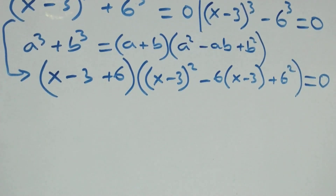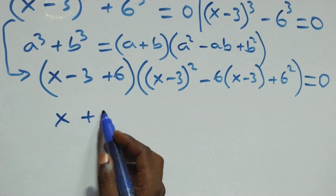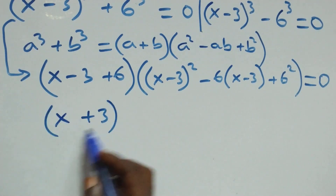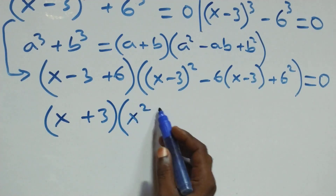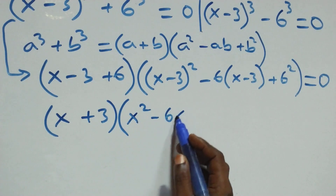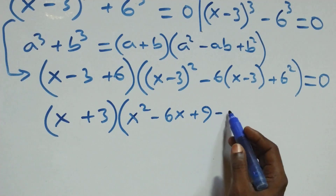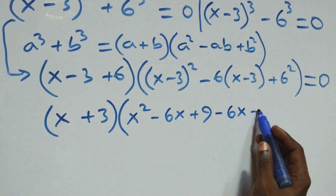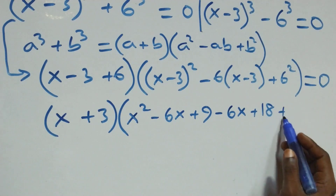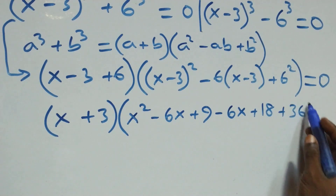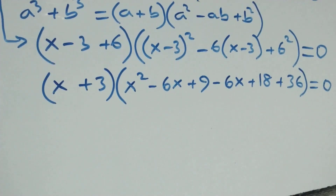This simplifies as (x plus 3), then open bracket — expanding gives us x squared minus 6x plus 9, then minus 6 open bracket, we have minus 6x plus 18, then plus 6 squared as 36, close bracket, equals to 0.